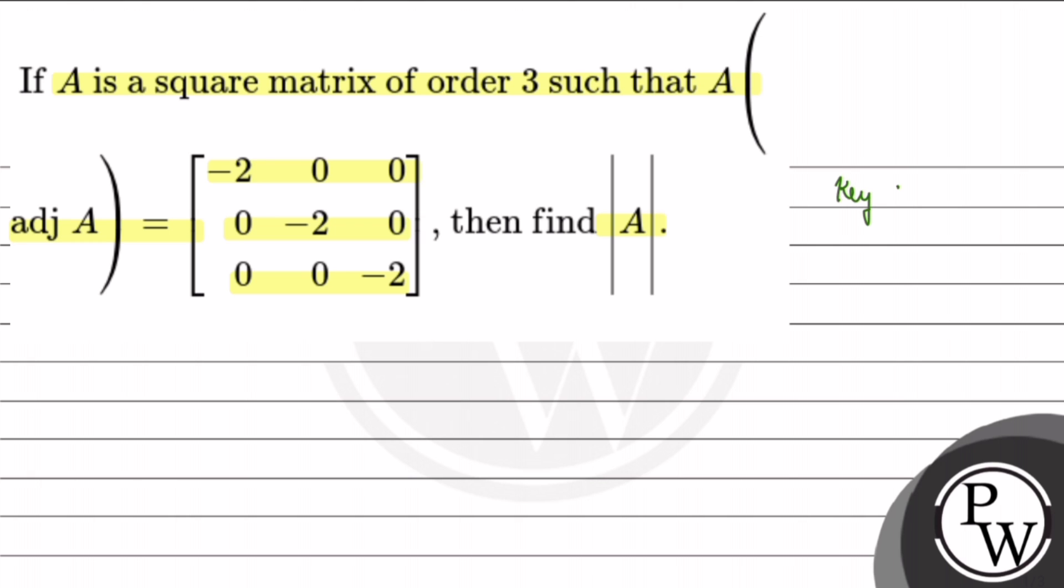So we need some key concepts to solve this question. We use the A inverse formula which is adjoint of A upon determinant of A. This is our A inverse formula and we use a property: A into A inverse is equal to identity matrix I.